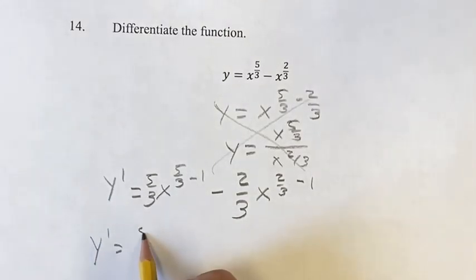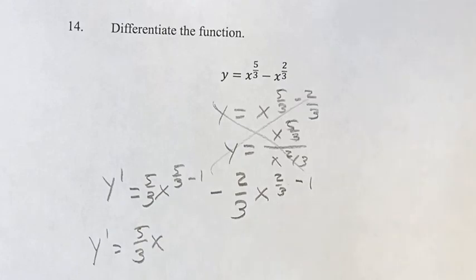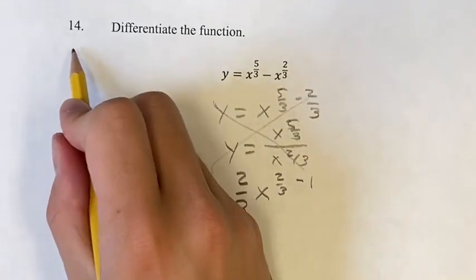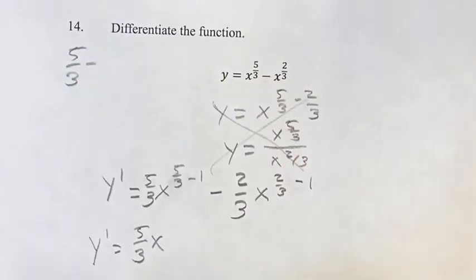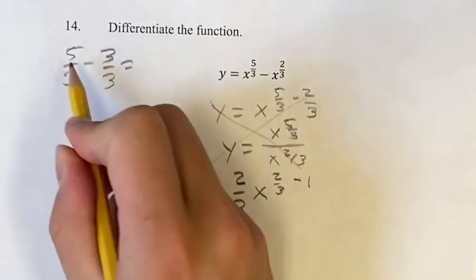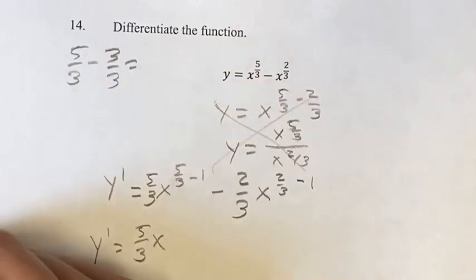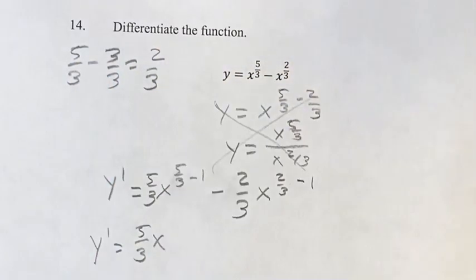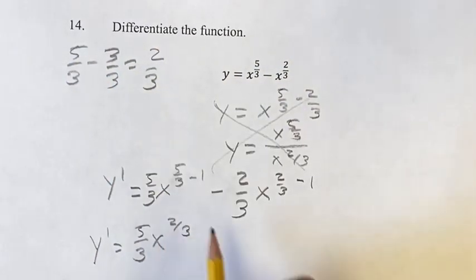So y prime is equal to 5/3 x. Where you can do this, 5/3 minus, want to get a common denominator, 3 over 3 is equal to 1. So this is 5/3 minus 3/3, so you can subtract the numerator and get 2/3. So this is our new exponent there.